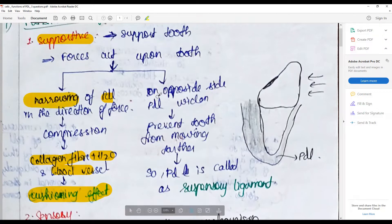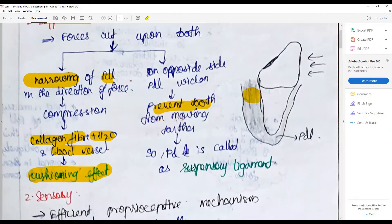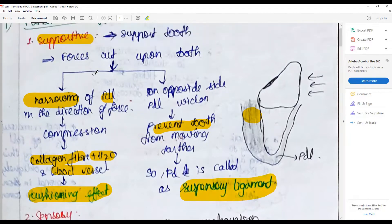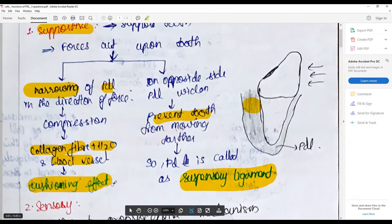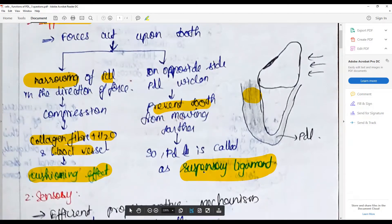On the opposite side, when force acts on the tooth, they widen and prevent the tooth from moving further. Hence it is called as a suspensory ligament, like a suspensor in a car. So the force is dissipated in two ways: one by the cushioning effect, then by acting as a suspensory ligament.